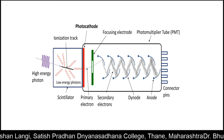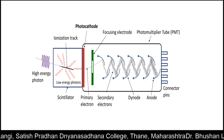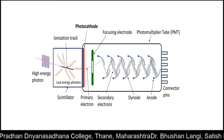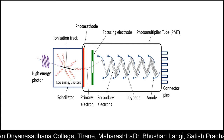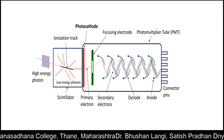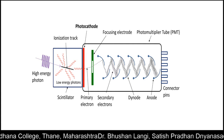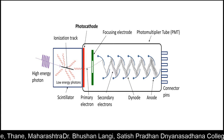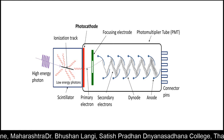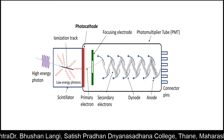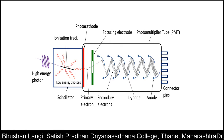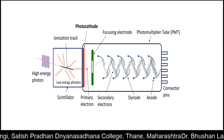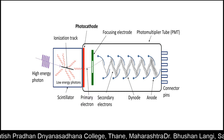When a high energy photon — that is, electromagnetic radiation — is incident on this phosphor, some scintillations are produced. The scintillations are also considered as electric sparks; they are low energy photons.